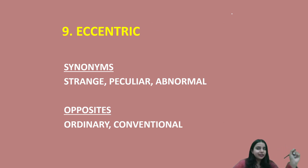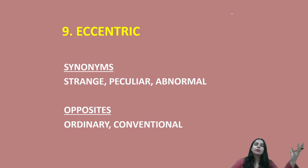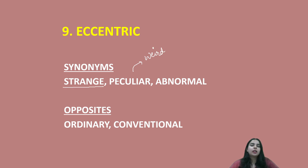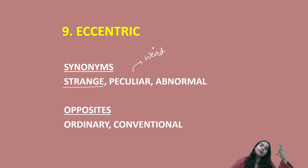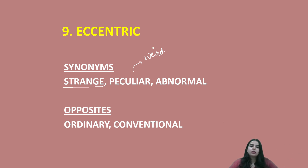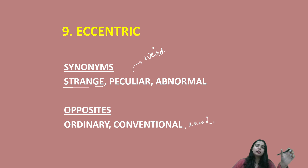Eccentric. Eccentric ka matlab hota hai bada ajeeb — very weird, abnormal, unusual. Synonyms: peculiar — meaning strange, alag, different — and eccentric overall means someone who is different. The opposite: ordinary, usual, conventional — what we think is normal and ordinary. So eccentric's opposites are ordinary, conventional, and usual.